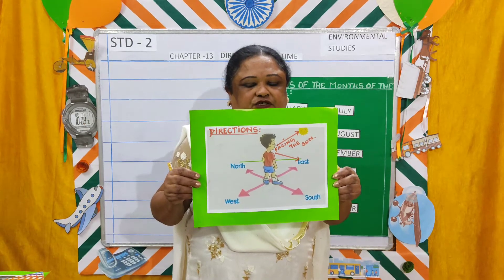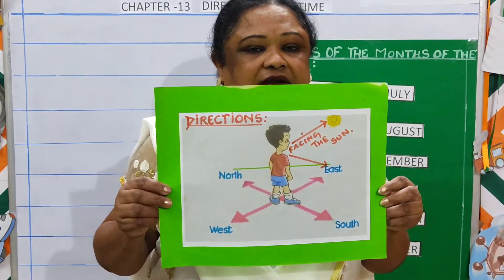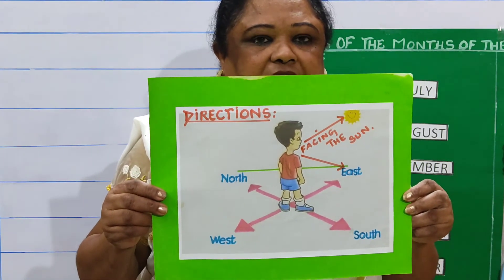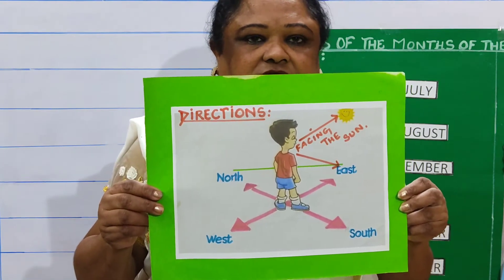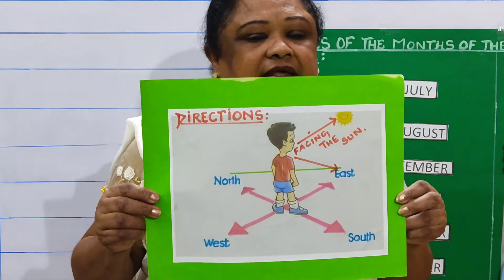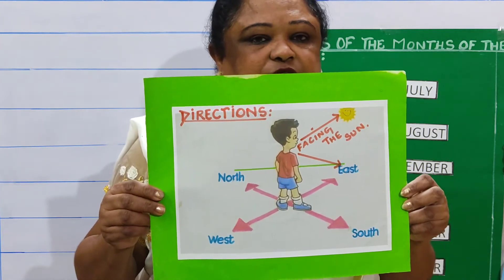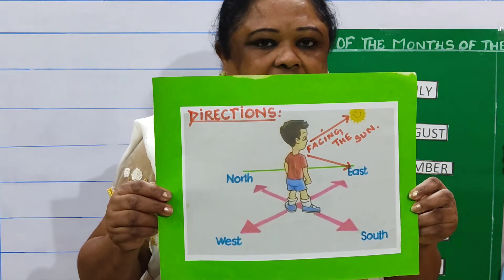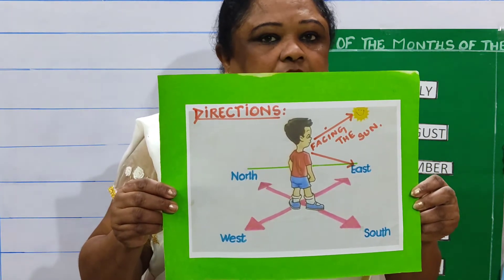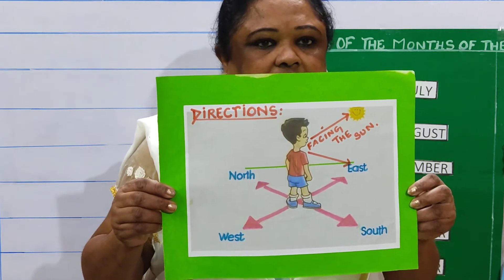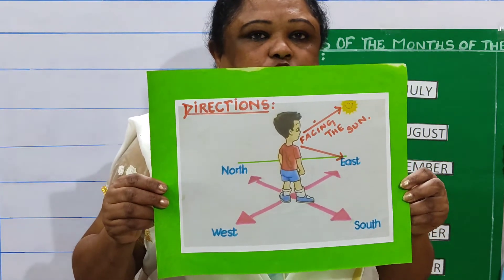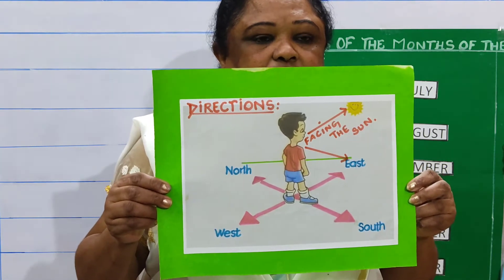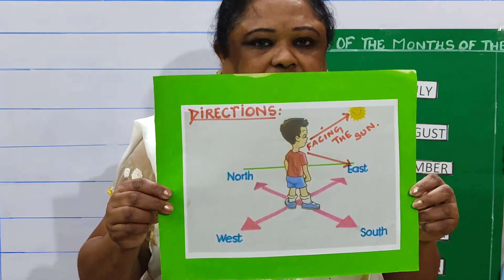Look at this picture, children. It shows you a boy facing the sun. So when he is facing the sun, he is facing East. His back is towards the West. His left hand is towards the North and his right hand is towards the South.